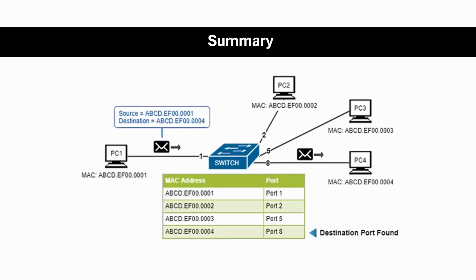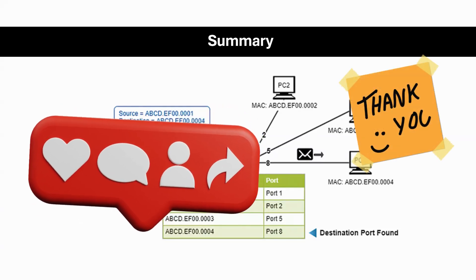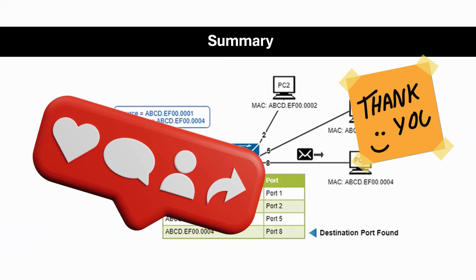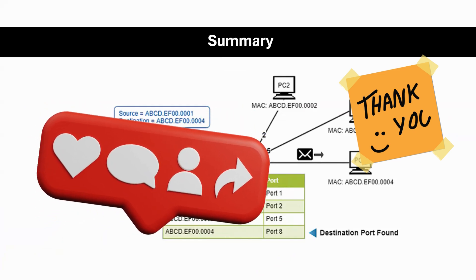So that wraps up things for Layer 2, the Data Link Layer. Remember that this layer is responsible for framing data, using MAC addresses to send that data to the correct device, and ensuring that data arrives without any errors. It's also the layer where switches operate, which are critical for directing traffic within the local network. That's it for today's lesson on Layer 2 of the OSI model. This layer is essential for making sure data flows smoothly between devices on the same network.